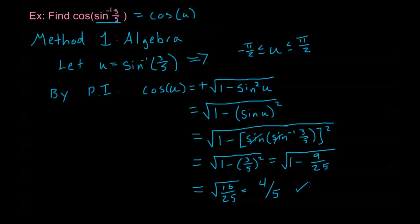And we're done — the answer is four-fifths. To summarize the algebraic method: take the inverse function on the inside and set it equal to a variable u. Determine where u must be from the range of sine inverse. Then use the Pythagorean identity and the cancellation property to solve for cosine of u.